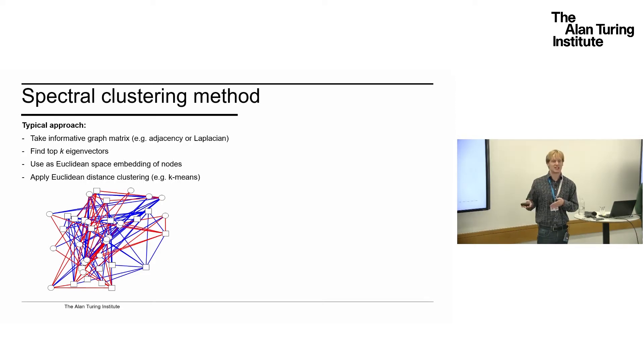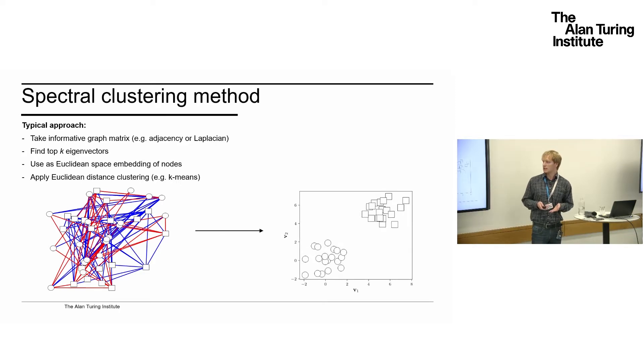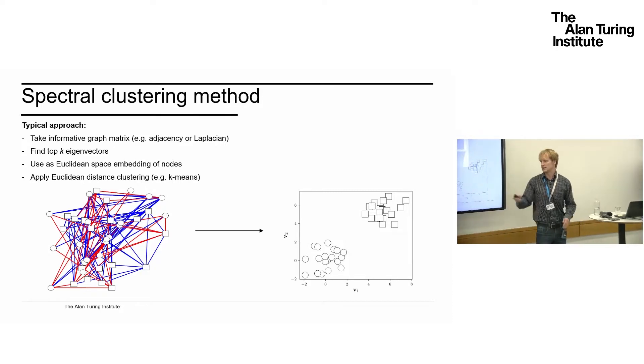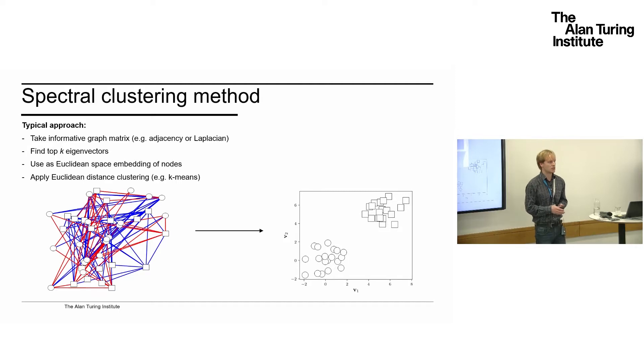We're applying spectral clustering with K equals 2. We take the adjacency matrix and the top two eigenvectors. If we plot a graph where the x-axis is the coefficient in the first eigenvector and the y-axis is the coefficient in the second eigenvector, the points separate out nicely so that any Euclidean clustering algorithm can tell us there are two groups here—the communities in the graph.